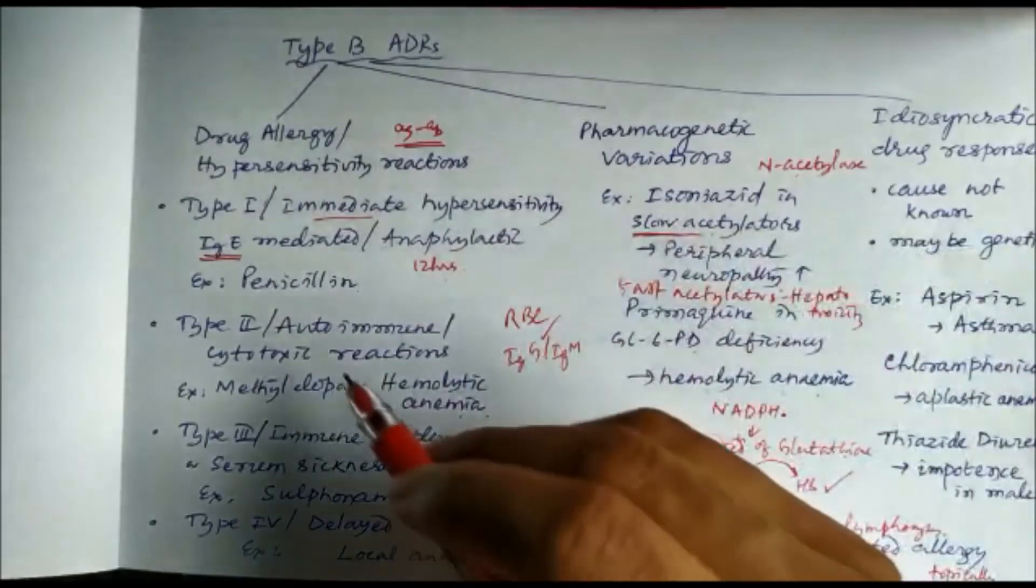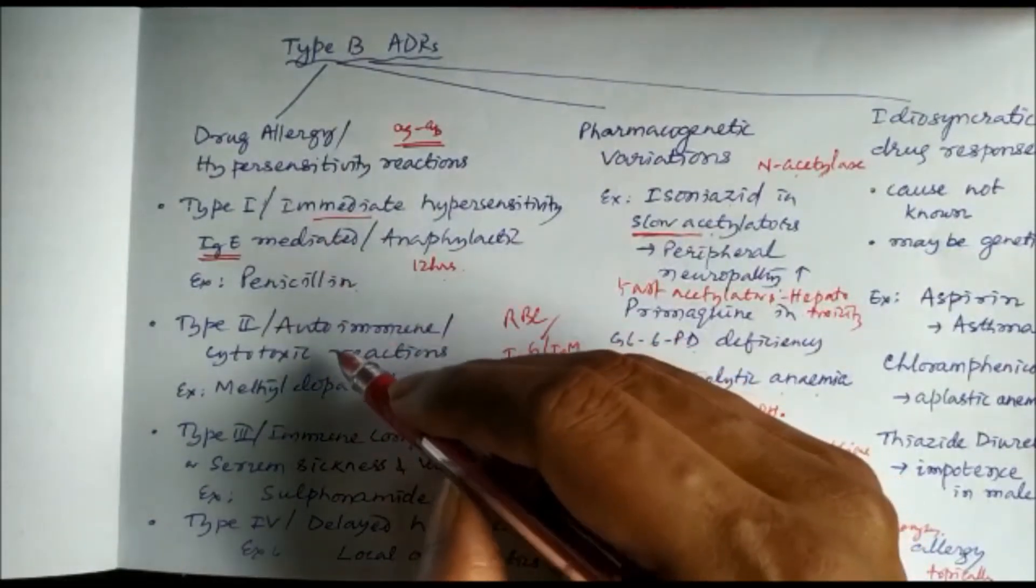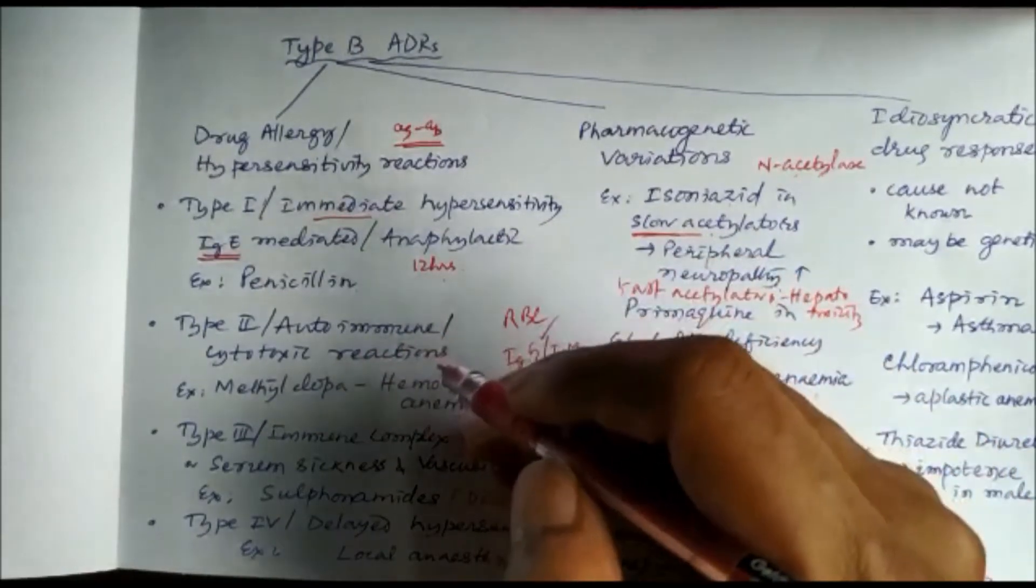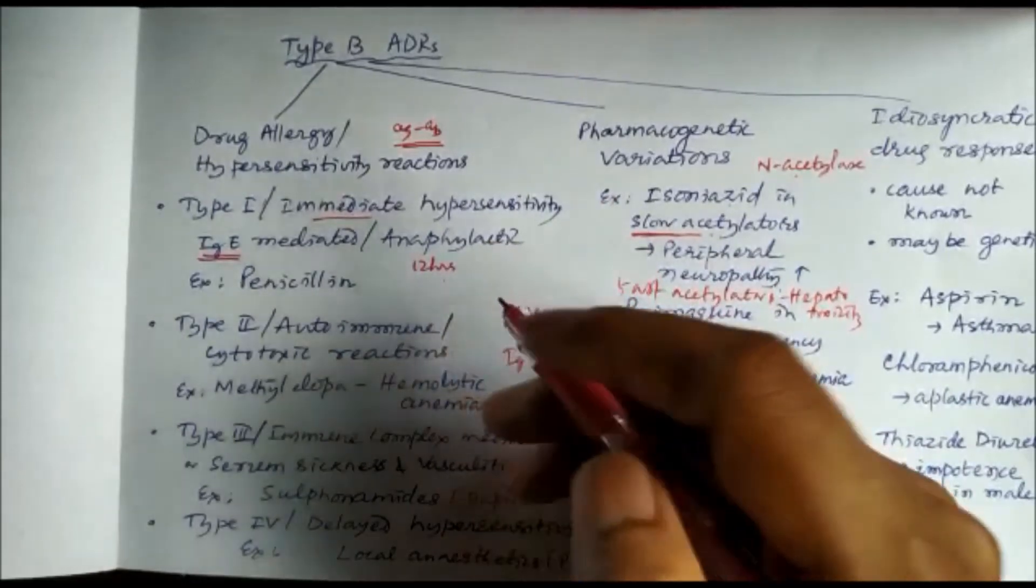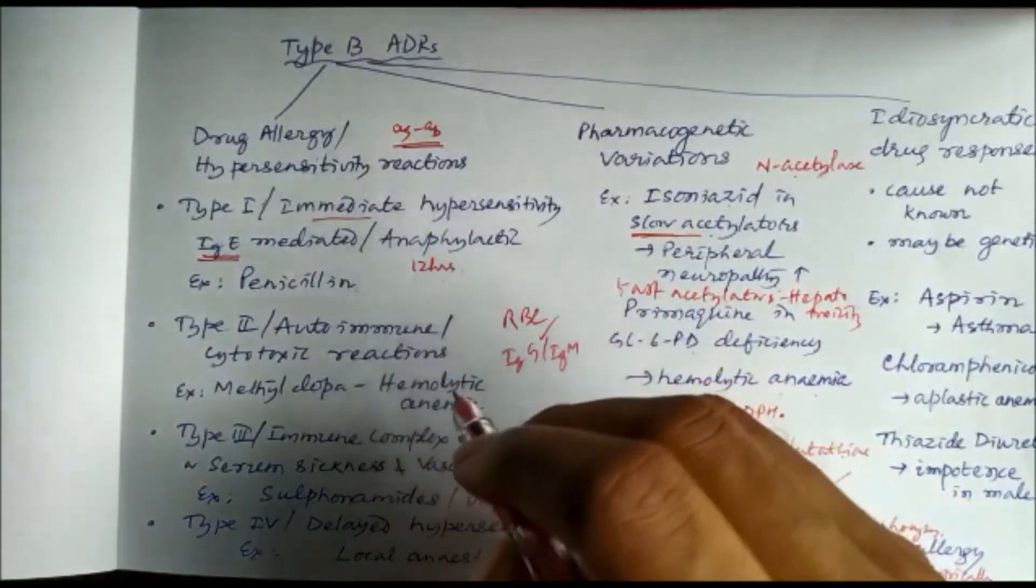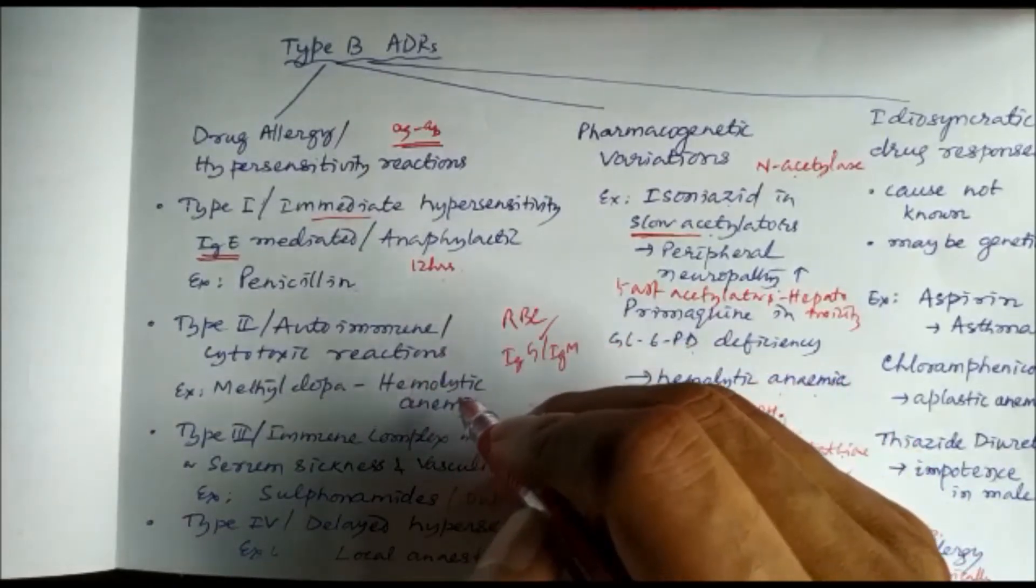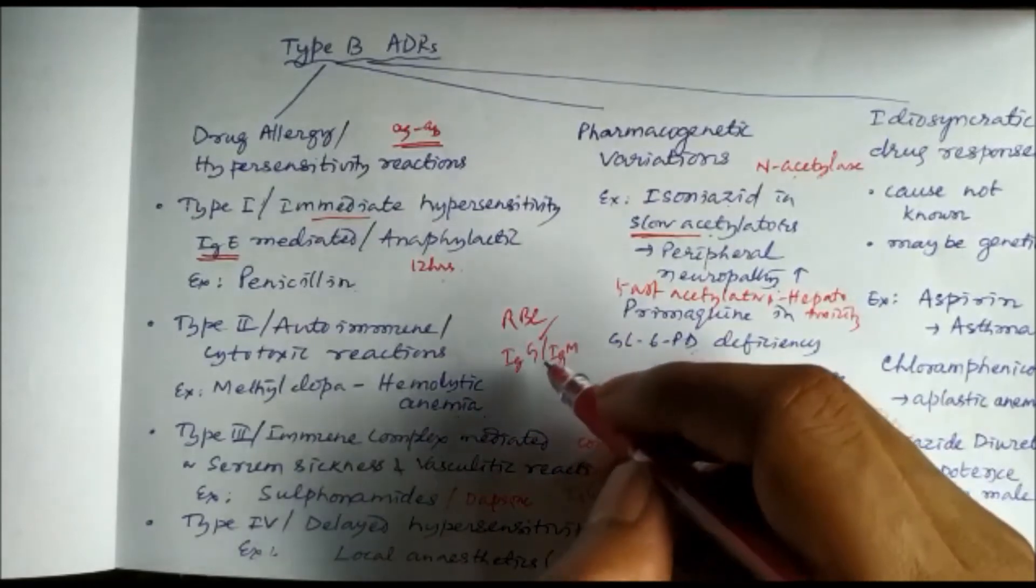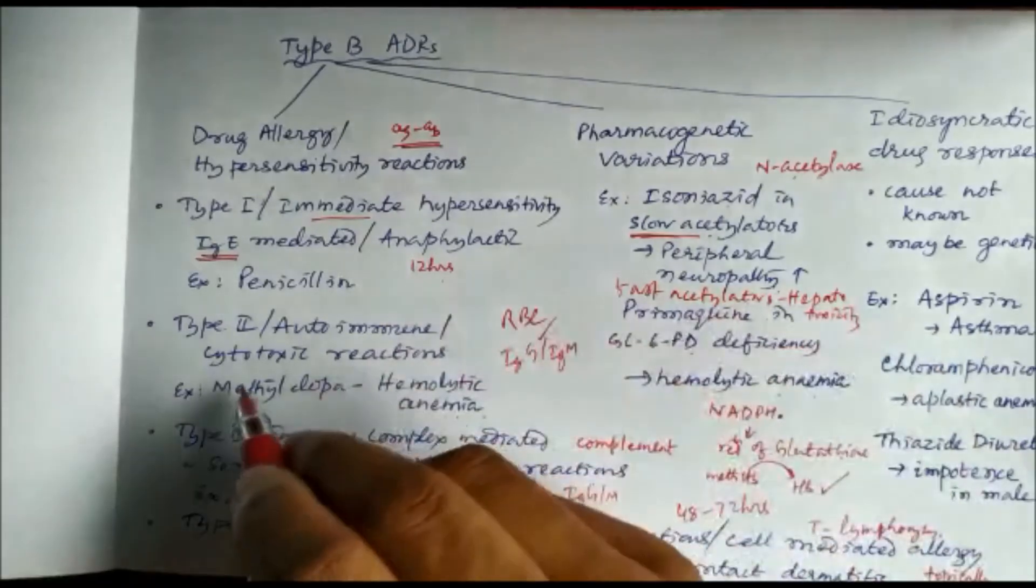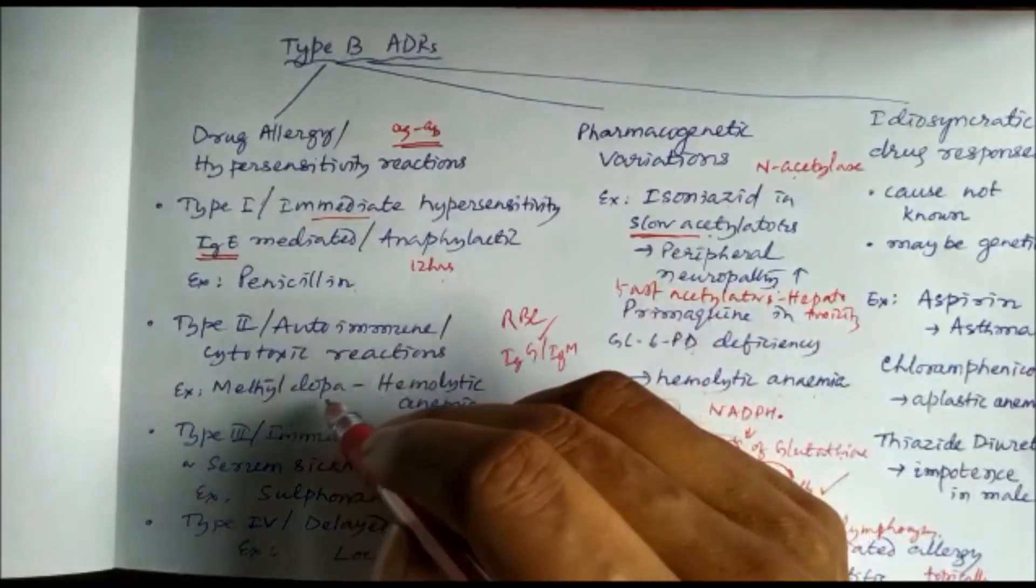Type 2 adverse drug reactions or Type 2 allergic reactions are also called autoimmune reactions or cytotoxic reactions. They are called autoimmune because the immune system is active against our own body cells. Here the blood cells are mainly affected. What happens is the drug binds to the surface of the blood cells and the antibodies like immunoglobulin G, sometimes immunoglobulin M, they bind to that and cause cytotoxicity, so the cells are destroyed. A very good example is methyldopa with RBC causing hemolytic anemia.